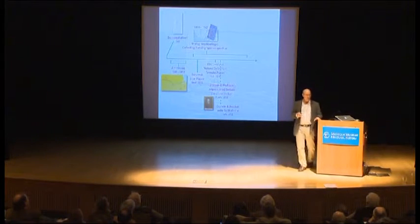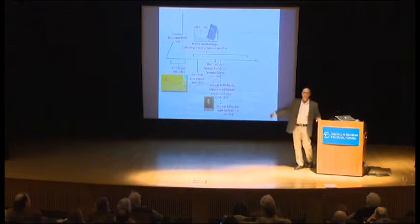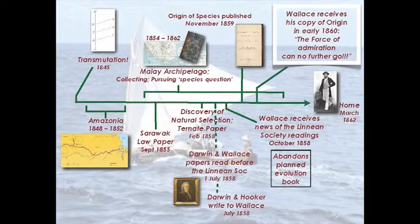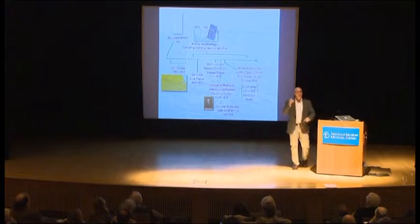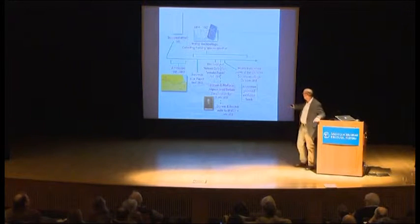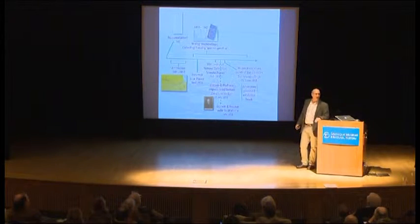Their papers are very promptly read in the so-called delicate arrangement by Charles Lyell and Joseph Hooker at the Linnaean Society on the 1st of July. Darwin and Hooker write to Wallace, still deep in the tropics. He doesn't hear news until the following October — and he was delighted. But at the same time, there is evidence in Wallace's species notebook that he was actively planning to write a book on evolution, and he very quietly abandoned that plan upon learning that Mr. Darwin was working on exactly such a book.